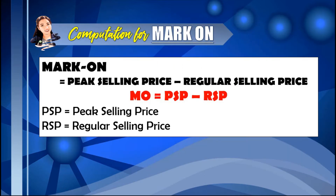So how to compute for mark on? The computation of mark on is based on the current selling price. We have: Mark On (MO) = Peak Selling Price (PSP) minus Regular Selling Price (RSP), where PSP represents the peak selling price and RSP is the regular selling price.